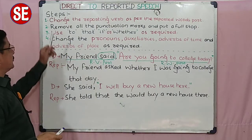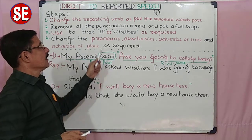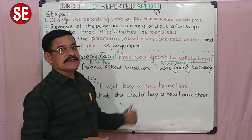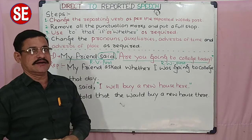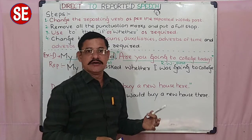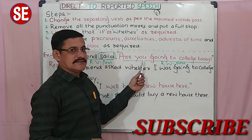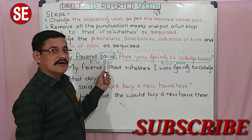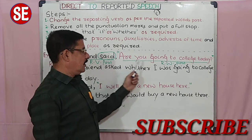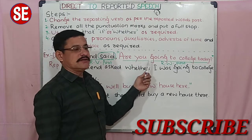So our first step is to change the reporting verb. Change it as per the reported words part — meaning, whatever kind of sentence the reported words part is, the reporting verb changes accordingly. If it is a question, then 'said' becomes 'asked'. If it is an order, it becomes 'ordered'. If it is a request, it becomes 'requested'. If it is an exclamation, it becomes 'exclaimed'.